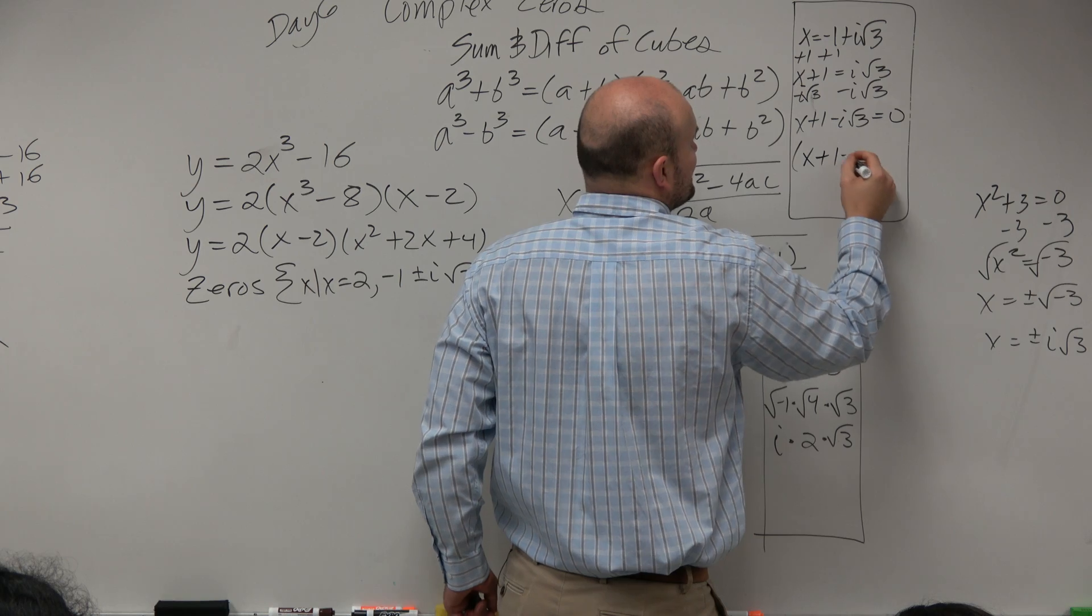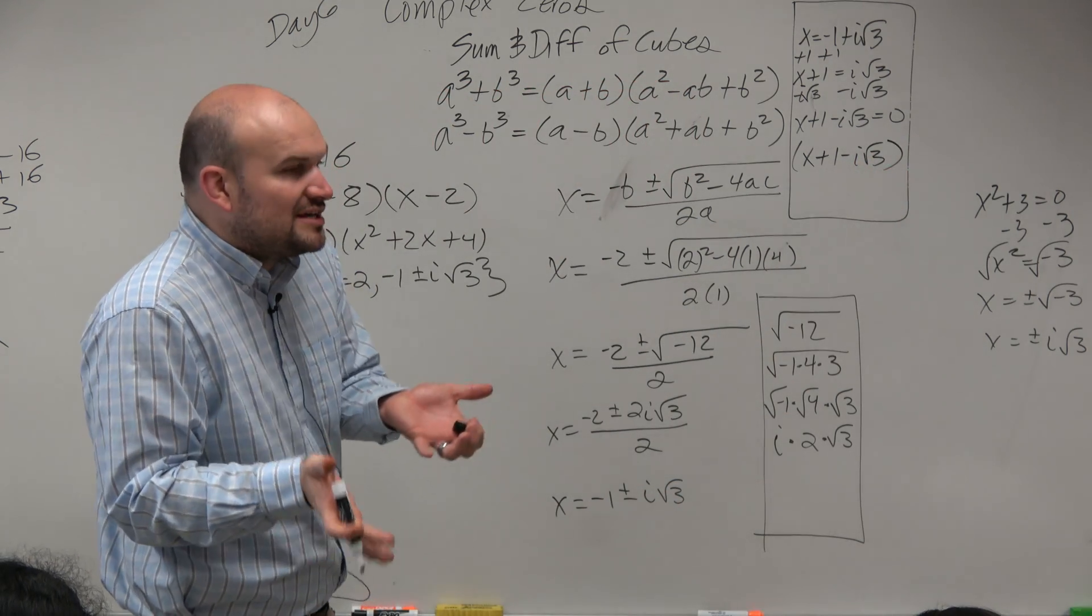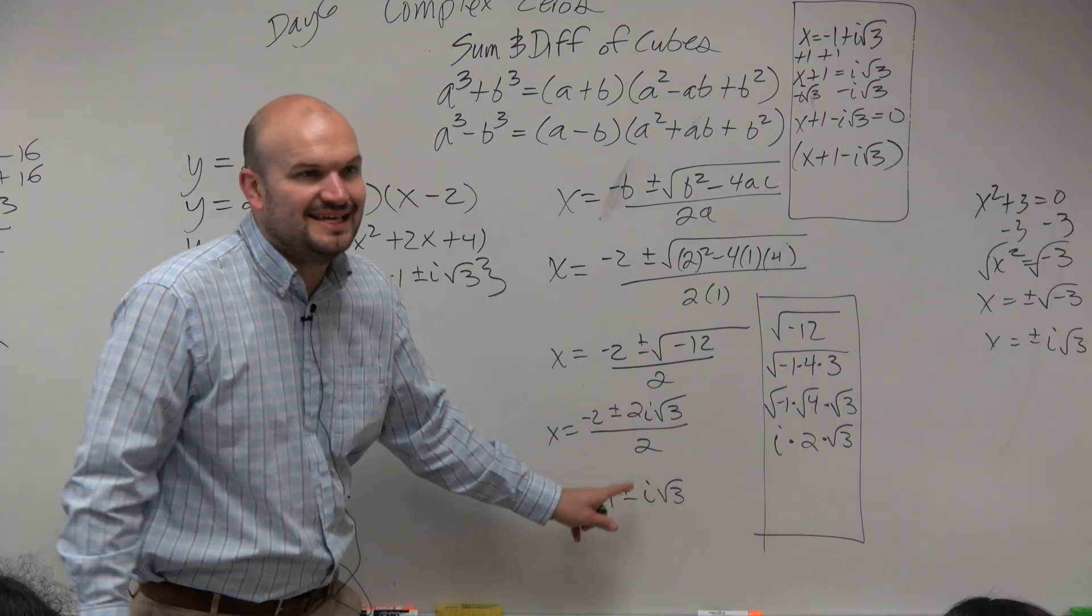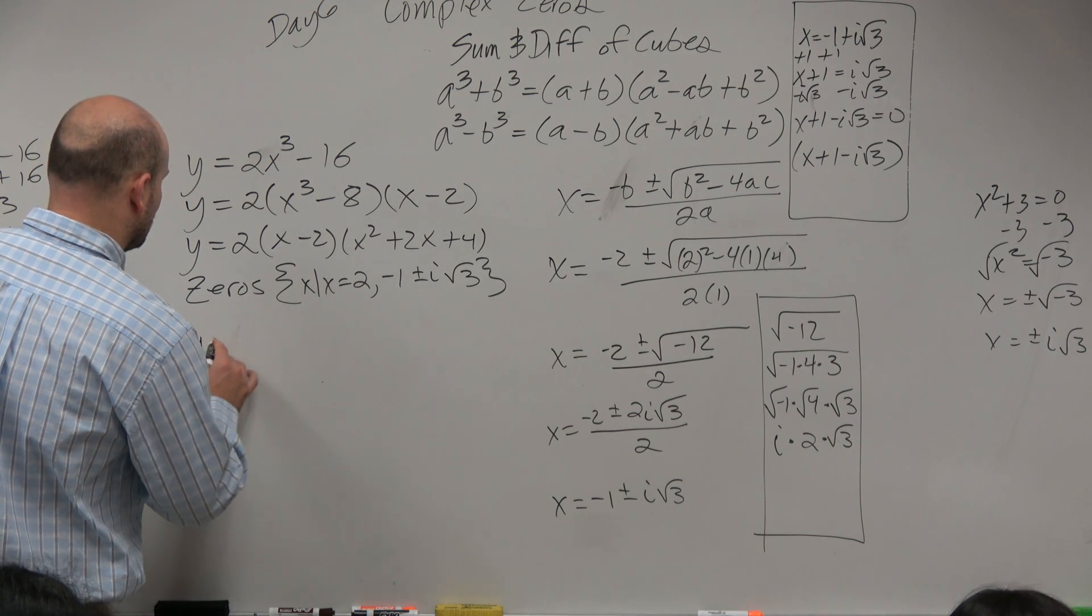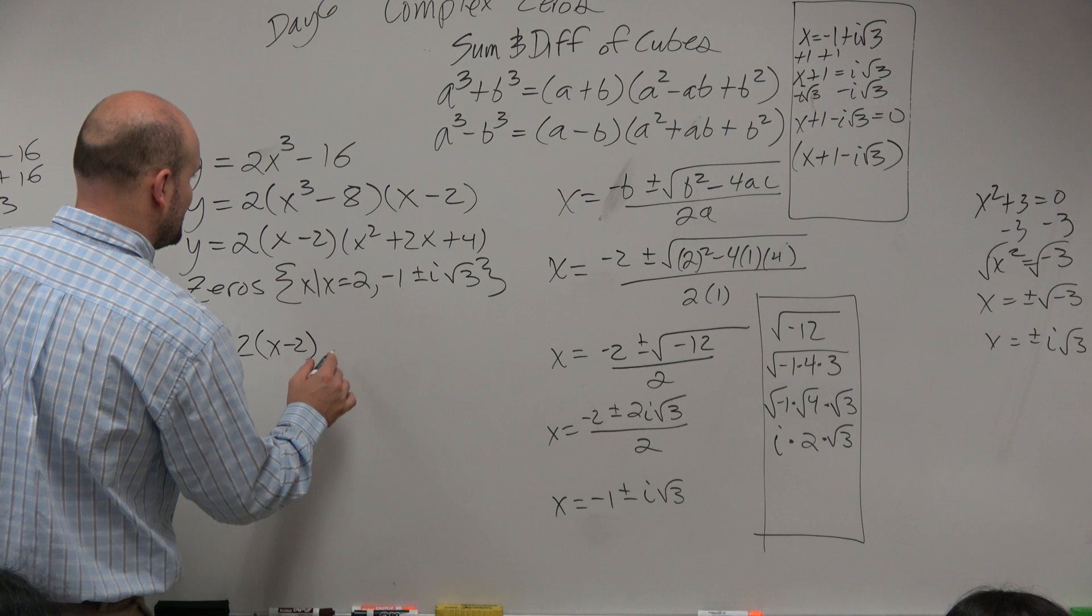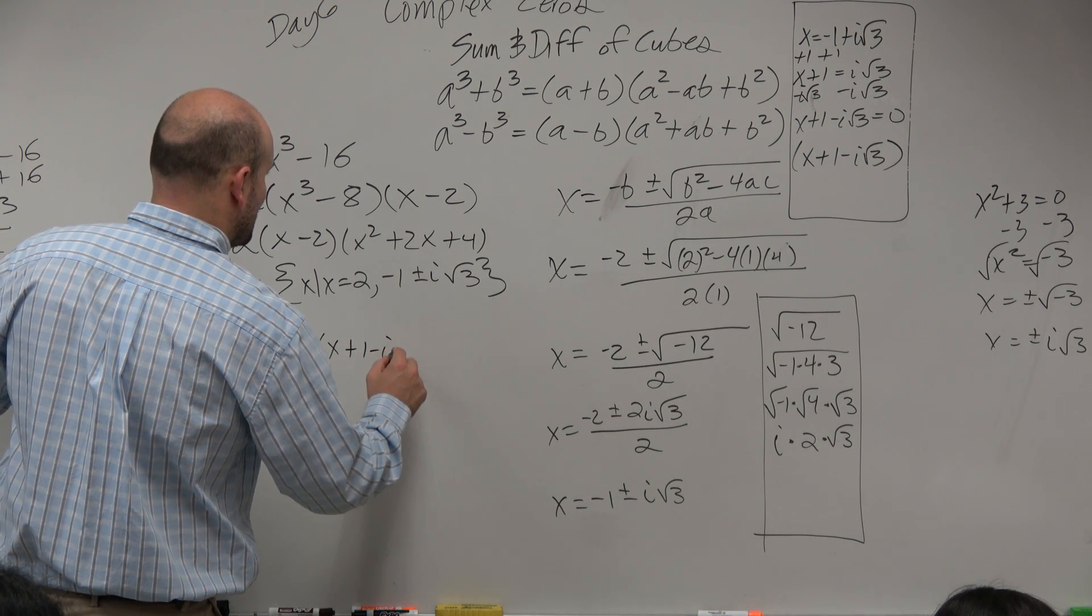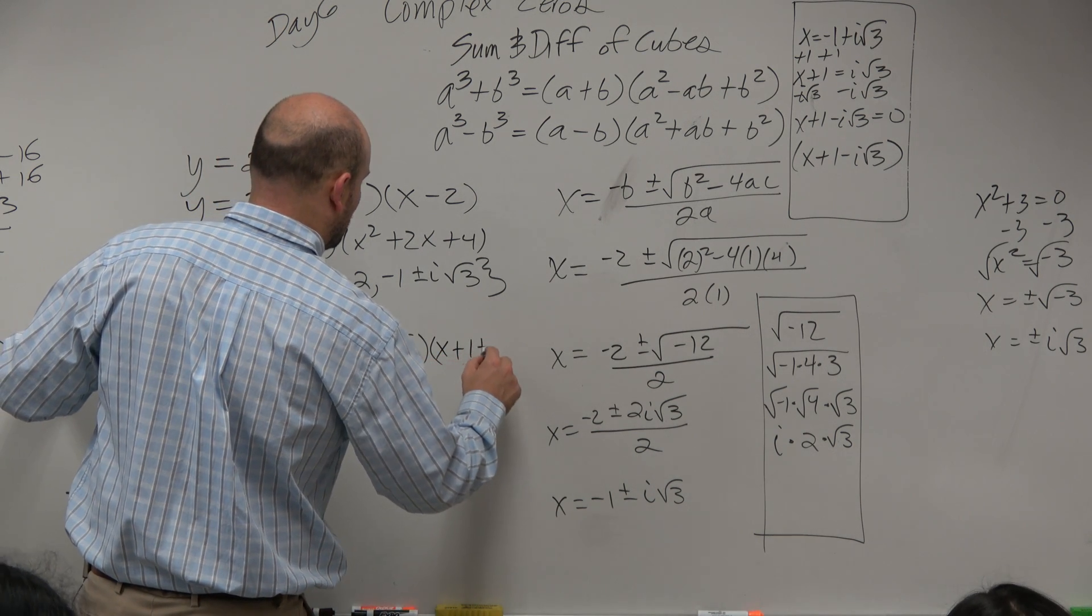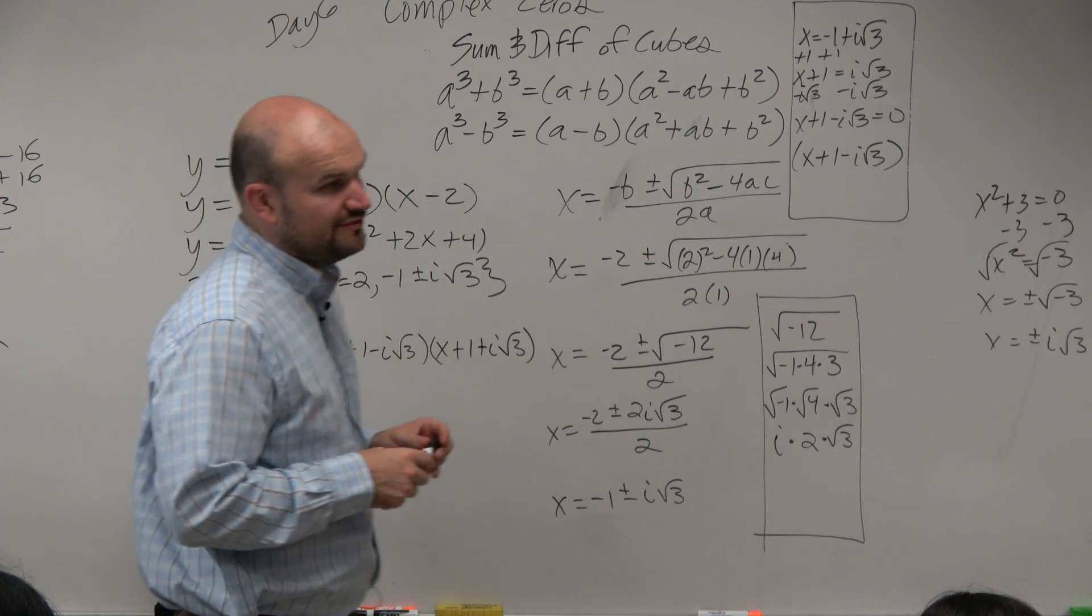So you'd have x plus 1 minus i square root of 3 equals 0. Well, guess what, guys? That is your factor. That's what your factored form would be. So basically, all you're doing is using the inverse operation of these to get them in factored form. So if I say, what's the linear factorization? You're going to have 2 times x minus 2 times x plus 1 minus i square root of 3 and x plus 1 plus i square root of 3. And that would be your linear factorization.